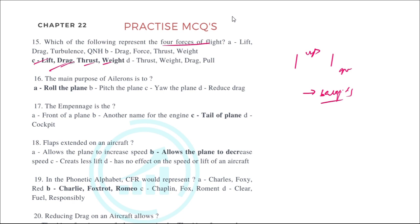The main purpose of ailerons is to control the roll of the plane. Ailerons are located on the aeroplane's wing surfaces and are used for the rolling movement.